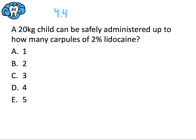A carpule of 2% lidocaine contains 36 milligrams — our second magic number from the pharmacology series. If you're unsure how that number was derived, check the first video in the pharmacology series on calculations. So: one carpule is 36mg, two carpules is 72mg, three carpules is 108mg. Our limit is 88mg, so three carpules is too much. Two carpules at 72mg is under the limit and is the closest without going over.